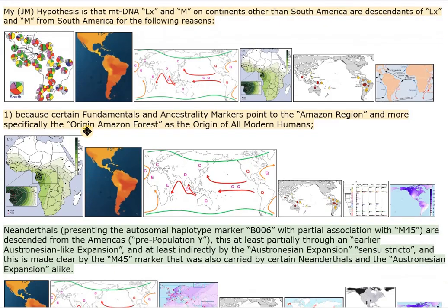There is a negative association between PV92 and the Diego blood group system. There is a positive association between PV92 on one side and population Y and M45 on the other side.